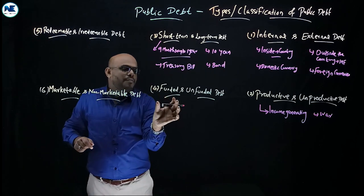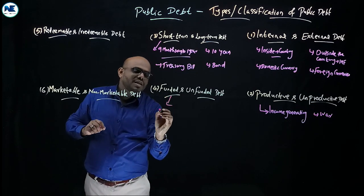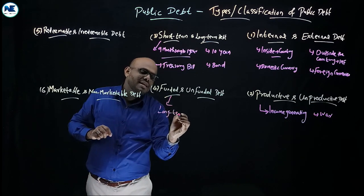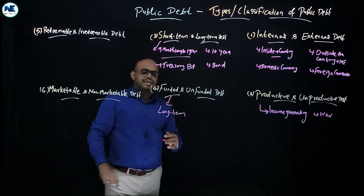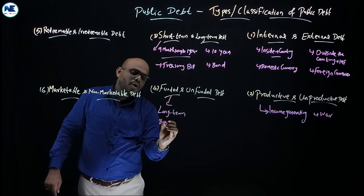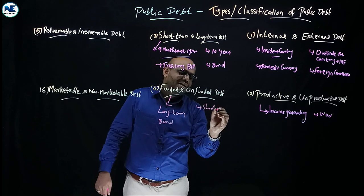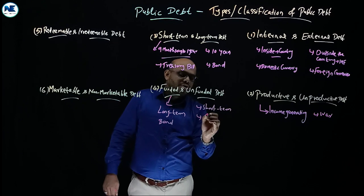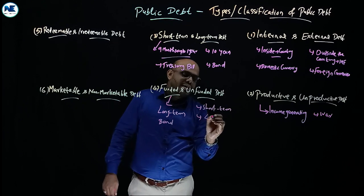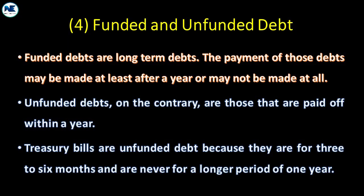Another classification is funded and unfunded debt. Funded debt is essentially long-term debt, as we have already discussed. Unfunded debt is short-term debt, where the maturity period is less than one year. A best example is treasury bills.